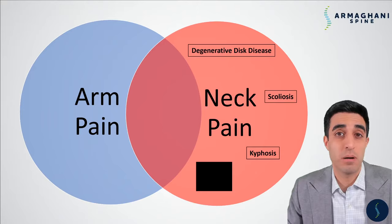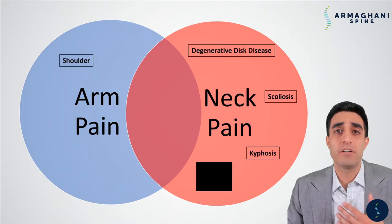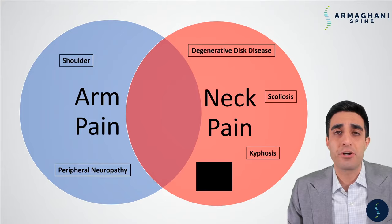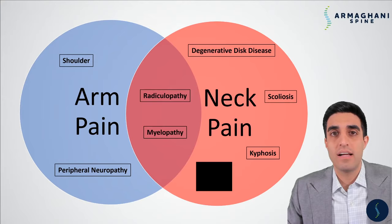With regards to arm pain, shoulder issues can commonly cause patients to have pain that goes into the arm, which can frequently be confused with having a neck issue. A peripheral neuropathy, something like carpal tunnel syndrome, can cause symptoms of numbness and tingling into the hand that are commonly seen in patients who have neck issues as well. But there are a couple of diagnoses that can cause both neck and arm pain: cervical radiculopathy is one, and cervical myelopathy is another.